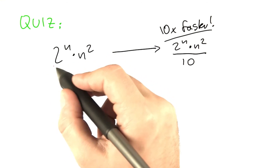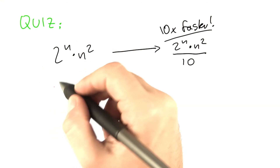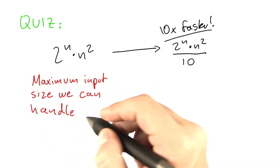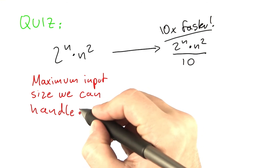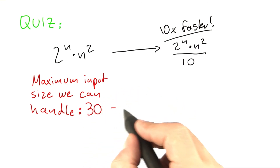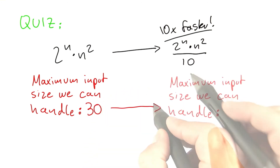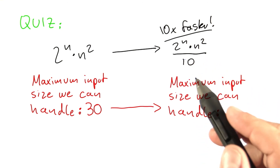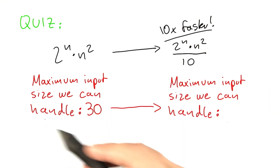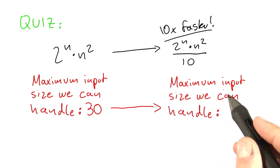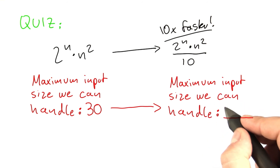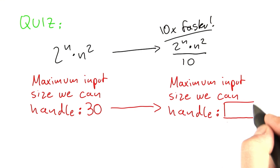Assume, for example, that for this algorithm, we have a computer where the maximum input size it can handle is 30. If we run this algorithm which is 10 times faster — a huge improvement — on the same machine, what is the maximum input size we can handle then? Please give your answer in this box.